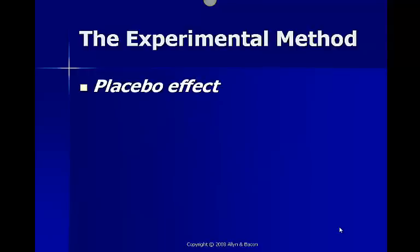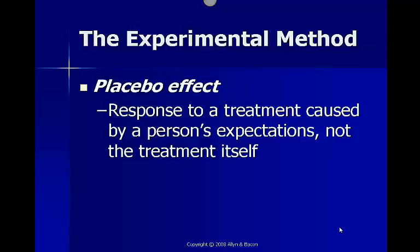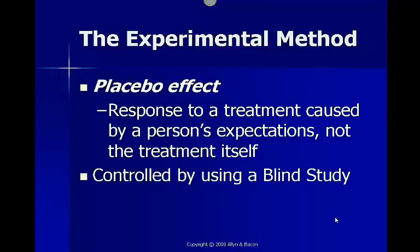Another possible problem is the placebo effect. This is when a person's response to a treatment is caused by their expectations and not the treatment itself. A placebo is a fake treatment that appears to be real — the one most people are familiar with is a sugar pill. If you sign up for a study and you're told you're only taking a sugar pill, you're going to expect that you're not going to get better, so your expectations are going to affect the outcome. We control this by using what we call a blind study, where when you sign up you're not told whether you're in the experimental group or the control group. Therefore, your expectations cannot affect the outcome because you don't know whether you're receiving the real treatment or not.